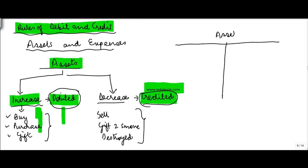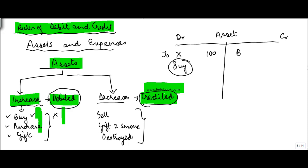If I were to show this in the form of an account — let us say this is the asset account — you have a debit side and a credit side. Suppose you buy an asset from X: asset account is debited to X, whatever the number. If you sell, you write by X and read it as asset account credited by X hundred.